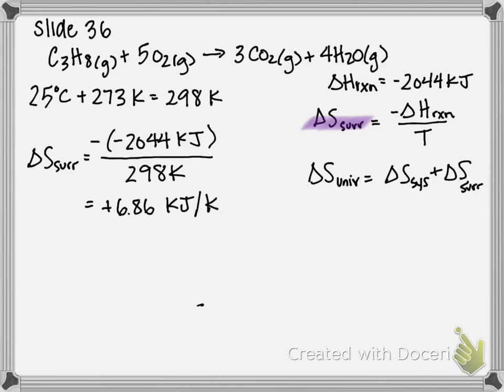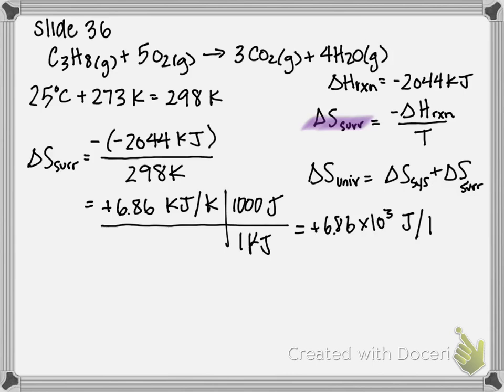Now typically delta S is reported in units of joules per Kelvin, so I'm going to go ahead and do my conversion for that. One kilojoule is a thousand joules, therefore my answer is positive 6.86 times 10 to the third joules per Kelvin.